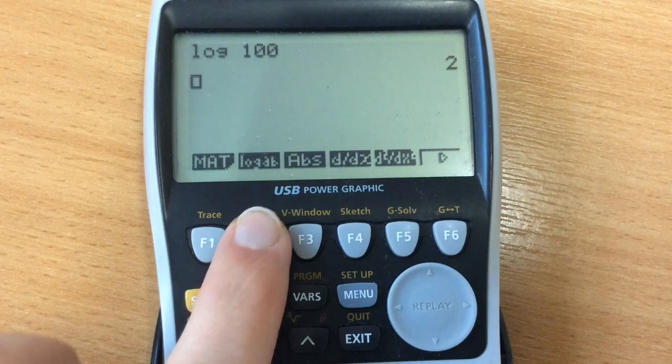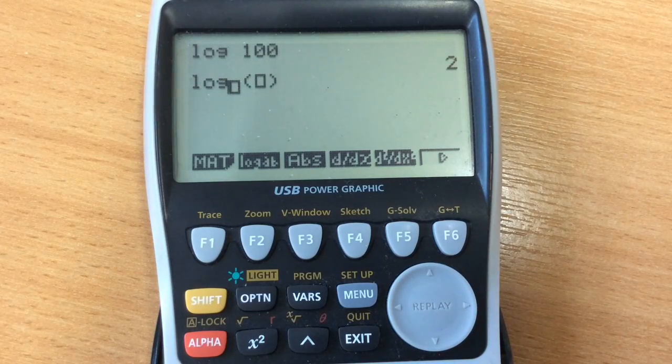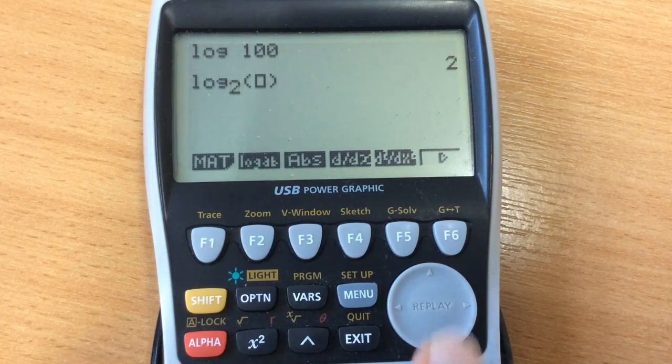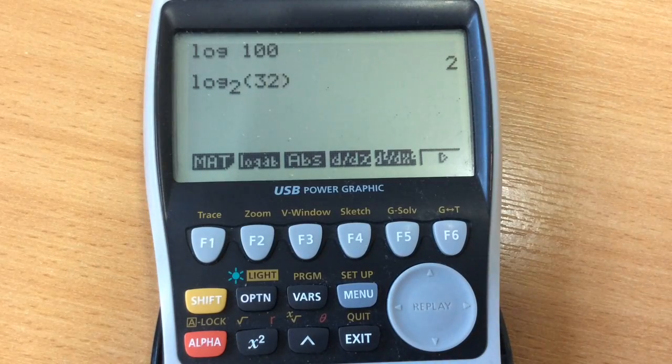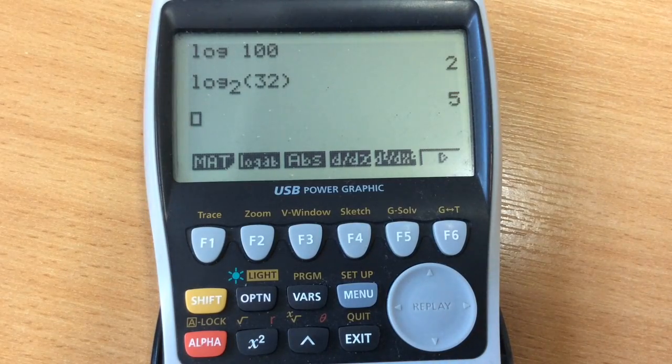We can see straight away log to base a of b, so we can do log to base 2 of 32. And there is our answer, and there you go.